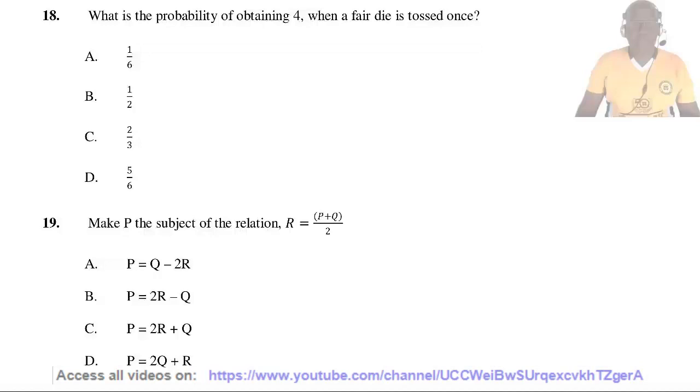Question 18. What is the probability of obtaining a 4 when a fair die is tossed once? A die has 6 surfaces, numbered from 1 to 6. So the probability of obtaining 4 is 1/6.